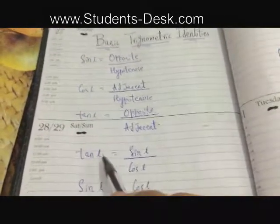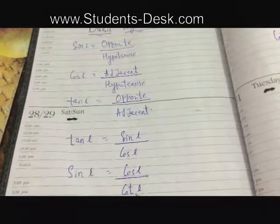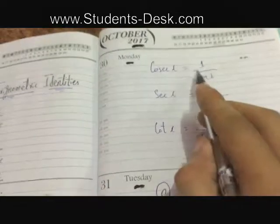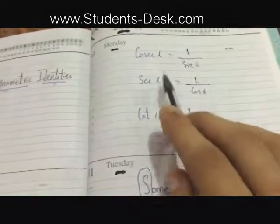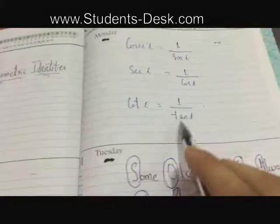Now, there are some more identities. Tan x is equal to sin x upon cos x, sin x is equal to cos x upon cot x, whereas csc x is equal to 1 upon sin x, sec x is equal to 1 upon cos x, and cot x is equal to 1 upon tan x.